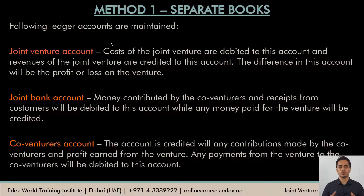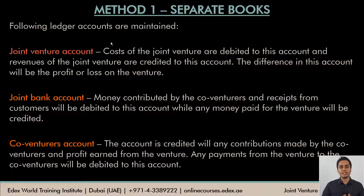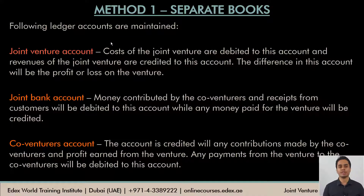A co-venturers account is also maintained, similar to partners' capital accounts in a partnership firm. It records resources contributed by the co-venturers and all transactions between the joint venture business and the co-venturers. At the end of the joint venture's life, when the project is complete, co-venturers are paid the balance in their accounts. If a co-venturer's account shows a net debit — more withdrawals than contributions — that co-venturer may need to contribute additional funds.